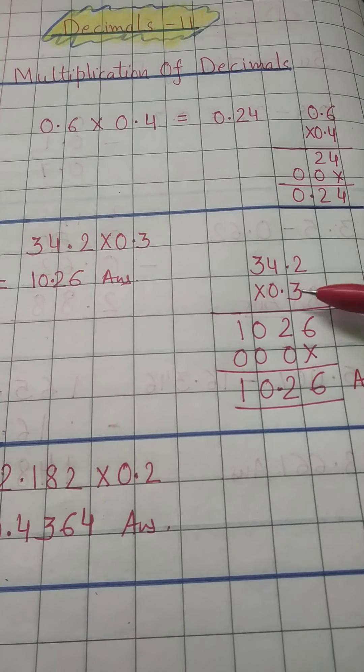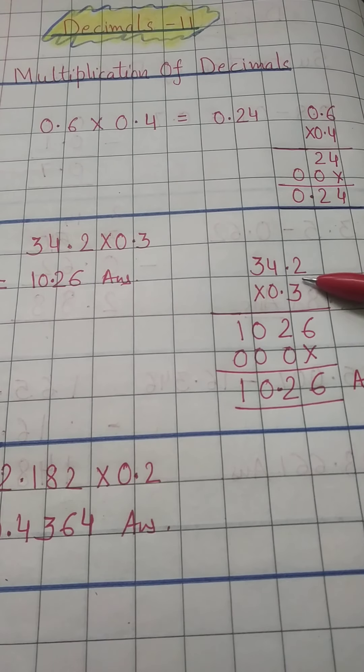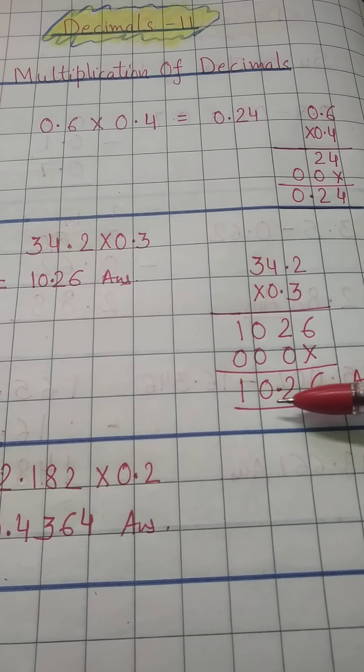If you want to do multiplication, otherwise no need to do. Only you have to count the numbers 1, 2, so here 1, 2, so answer will come 10.26. So this is the answer, 10.26. Understood?